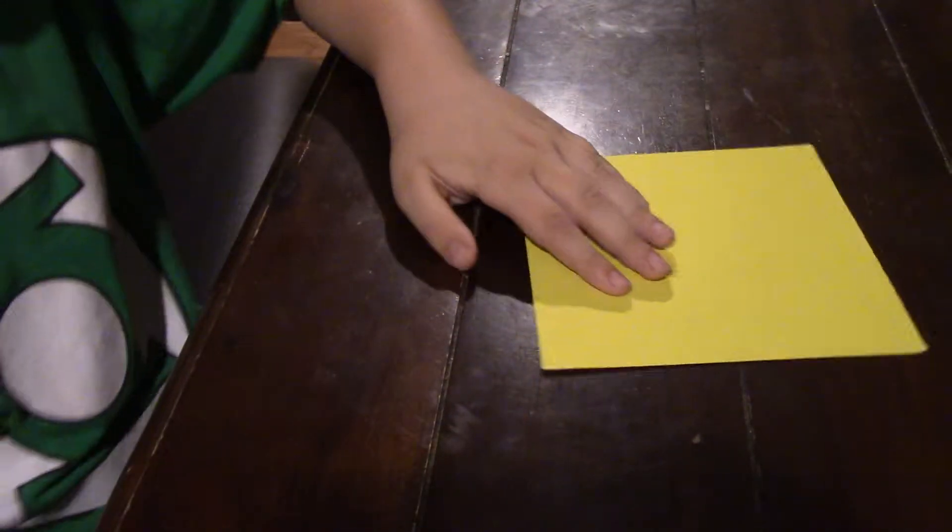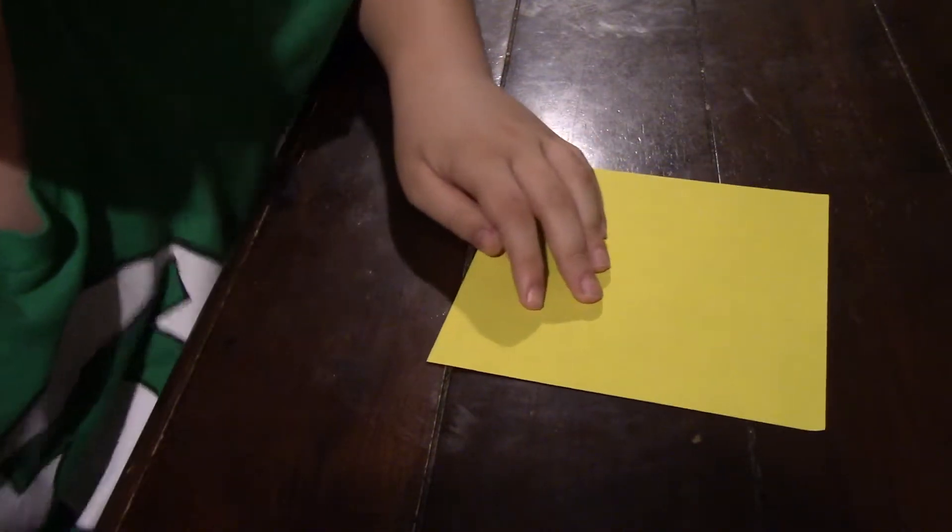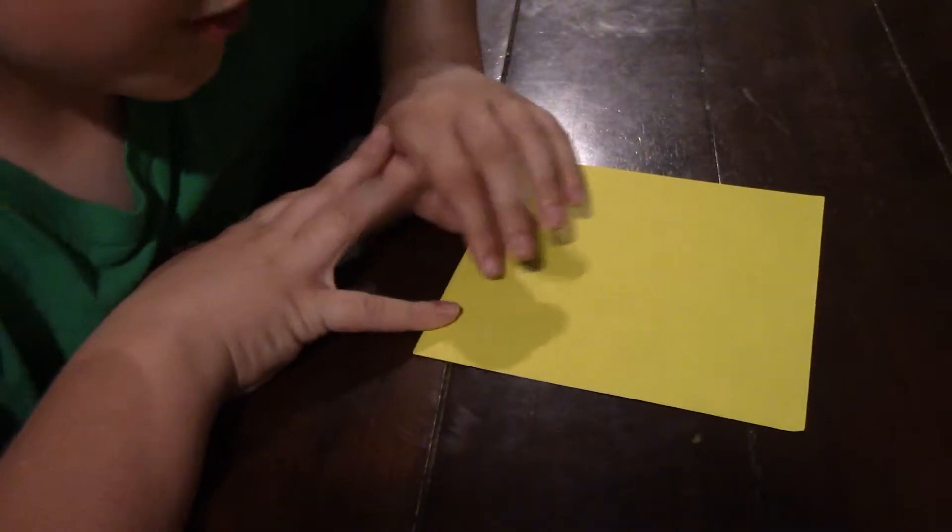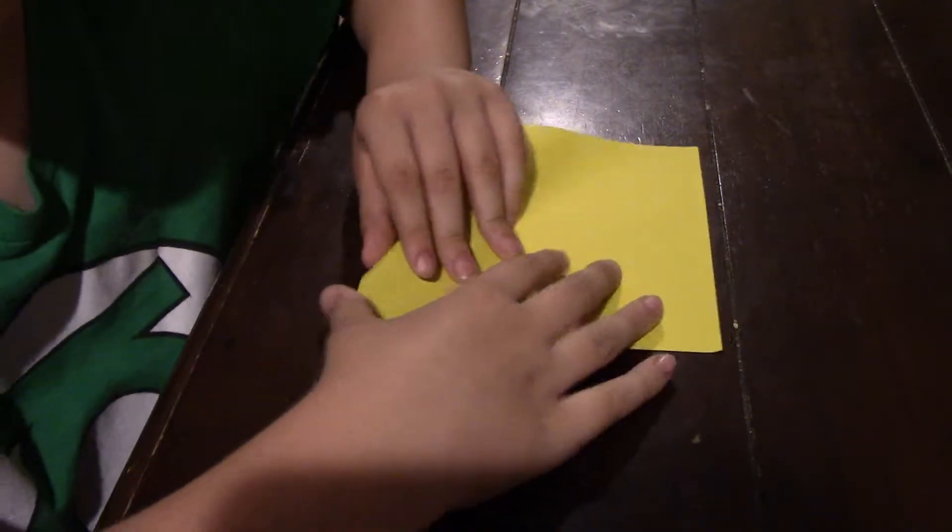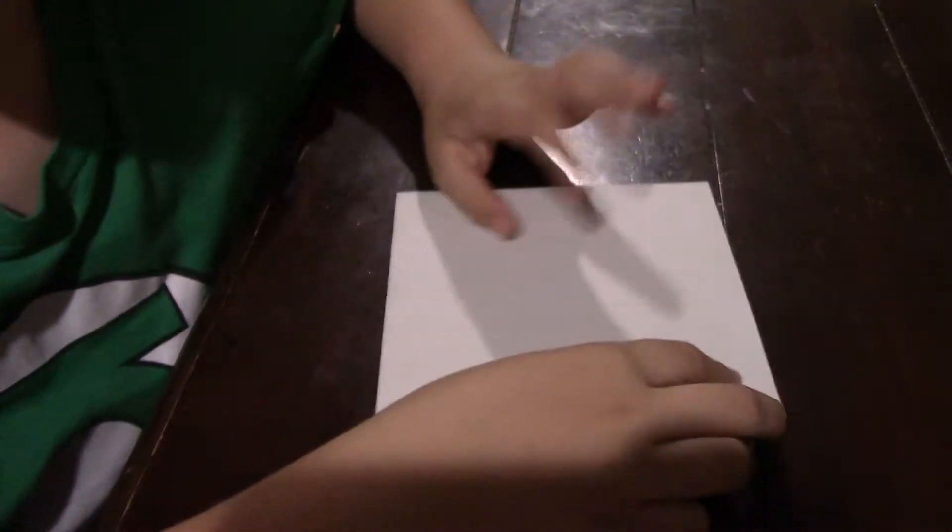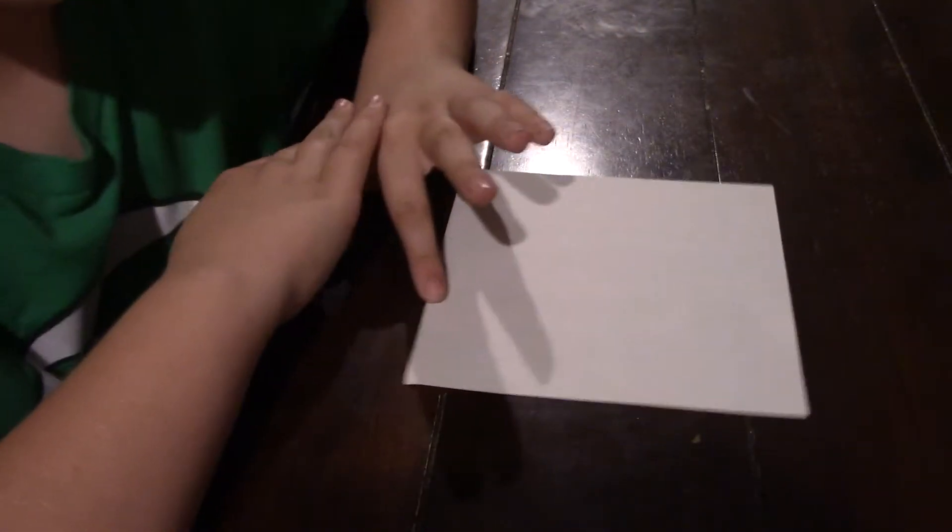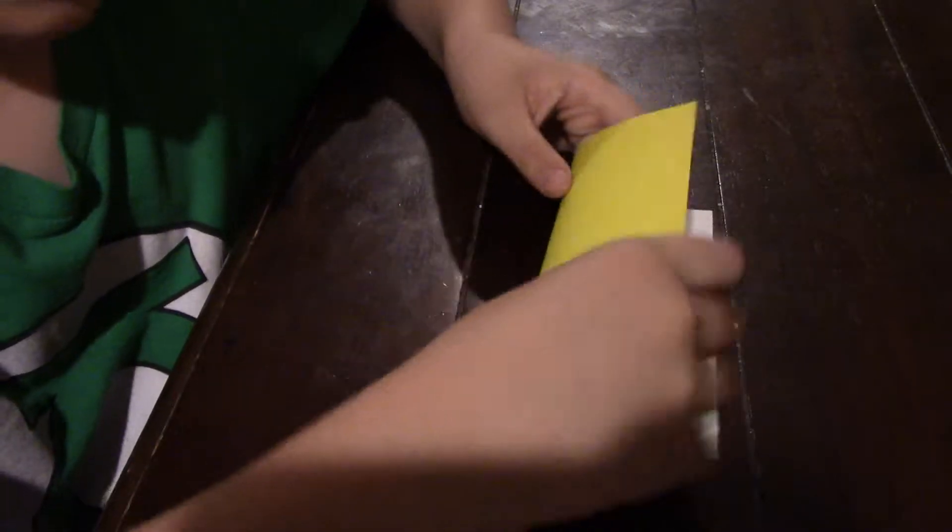Okay, you're going to start with a square sheet of paper. I'm using a piece of yellow origami paper. If you're using a piece of origami paper, you're going to start with the white side up and you're going to take it and fold it like this.